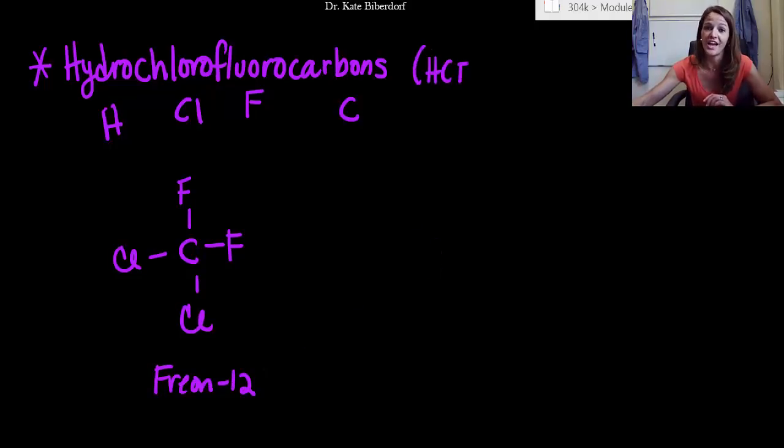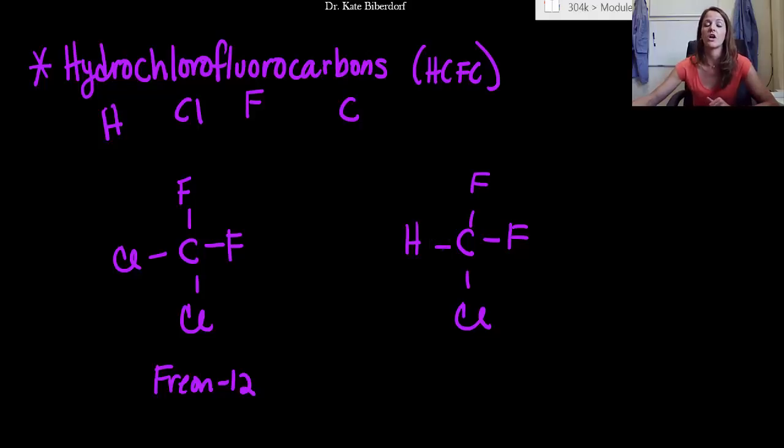Now the HCFC version of this has carbon in the center, we still have our two fluorines, but we limit it down to one chlorine now, because remember the chlorine is essentially what destroys the ozone. And now we have a carbon-hydrogen bond instead of a carbon-chlorine bond. So this one is actually referred to as R-22.